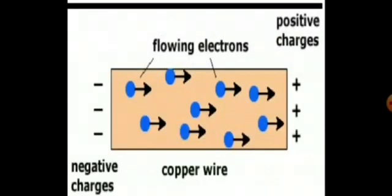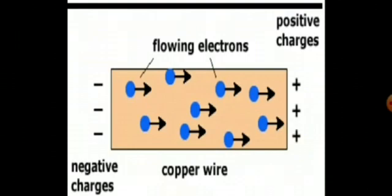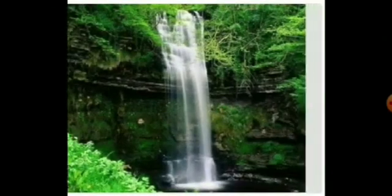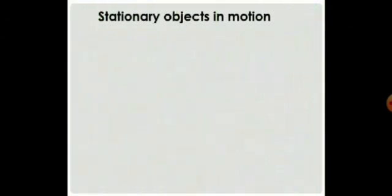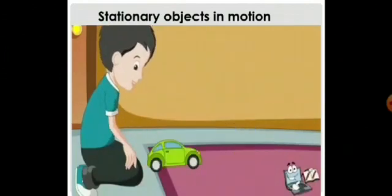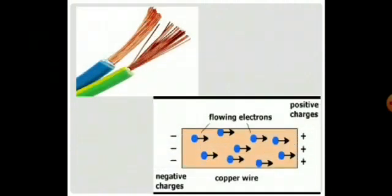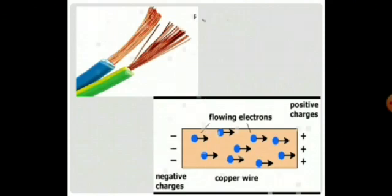Can the negative charge be made to flow? Yes, the negative charge can be made to flow. Can electricity be made to flow like water flowing from a higher to a lower level? Yes. You have learned that a force will have to be applied to put a stationary object into motion. We get current electricity when the electrons in an electrical conductor are made to flow. Copper wire is a good electrical conductor, so electrons are made to flow through copper wire. Now let's see the topic of current electricity.